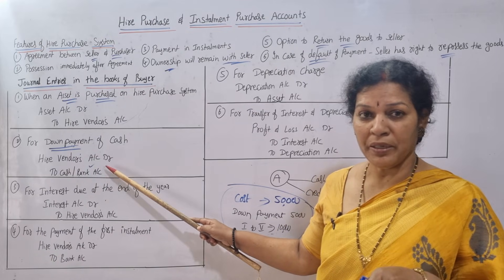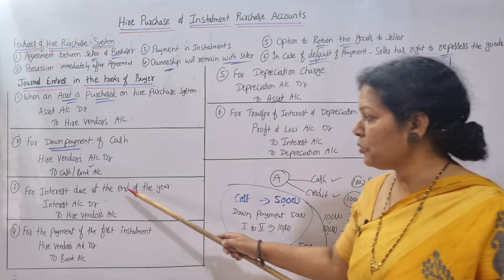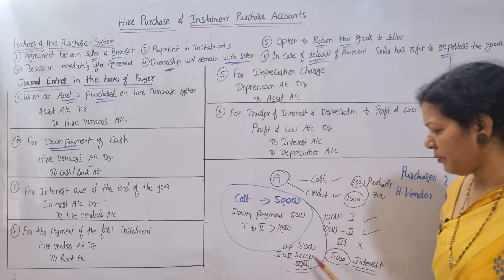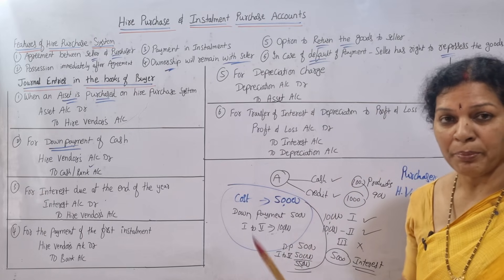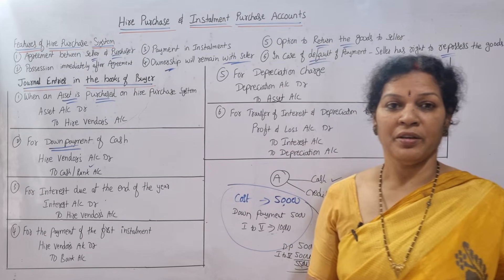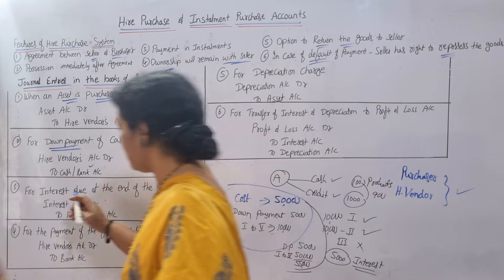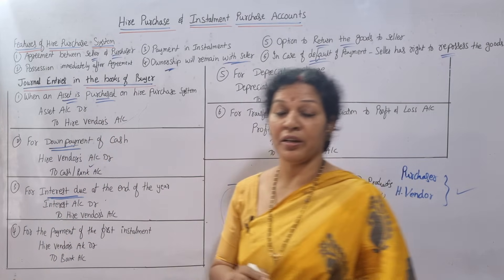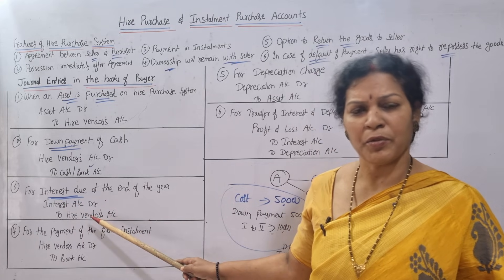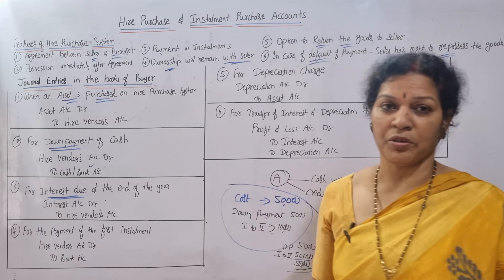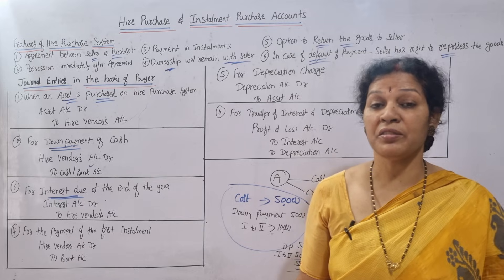Third entry: for interest due at the end of the year. Every year you have to account for the interest. Interest is an expense, so the entry is — Interest Account debit, to Hire Vendor's Account credit. This records the interest due to the hire vendor for the installment period.